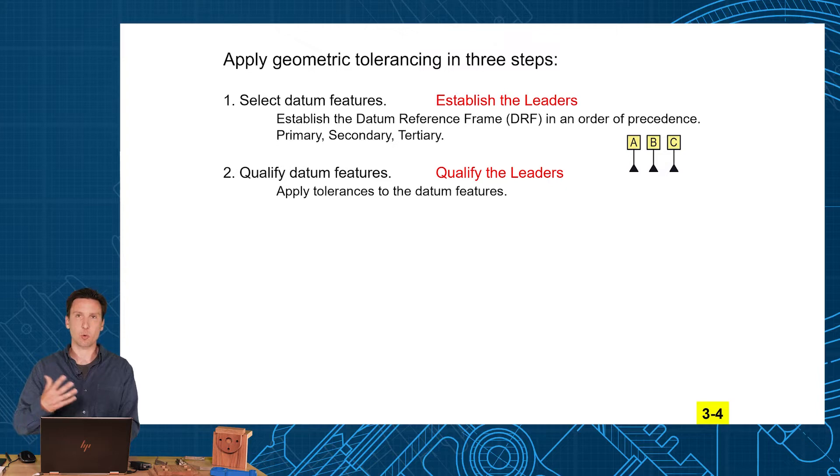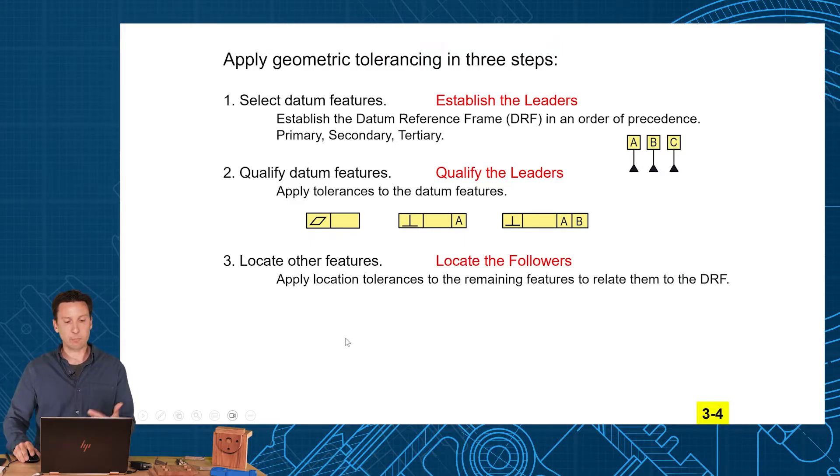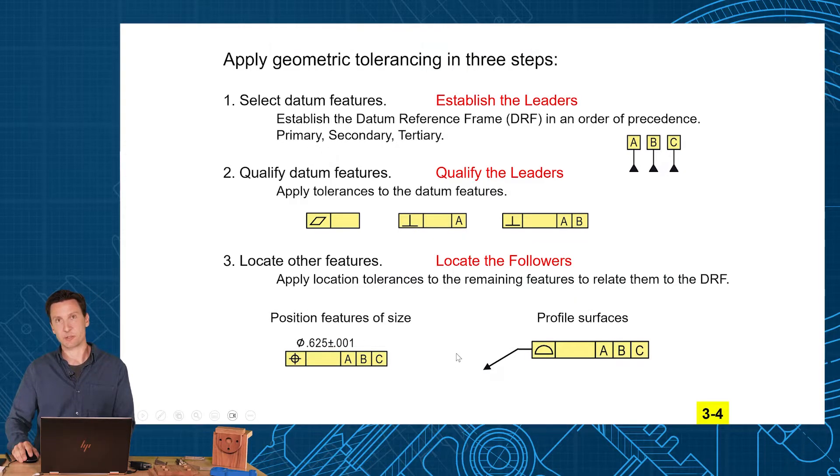After we select those datum features, we'll qualify those datum features using flatness, perpendicularity—relate B to A, relate C to A and B. Then we'll apply our third and final step: locate all the other features. Remember our two big location tolerances are position for features of size and profile for surfaces.